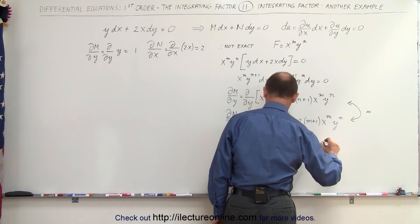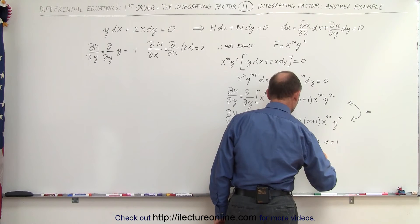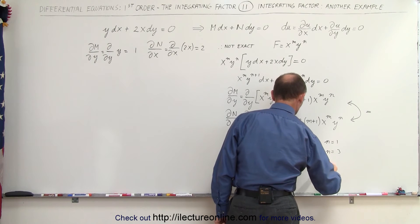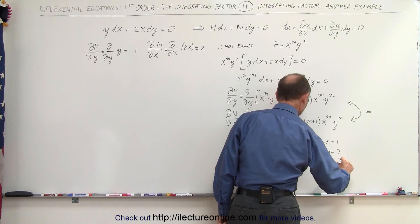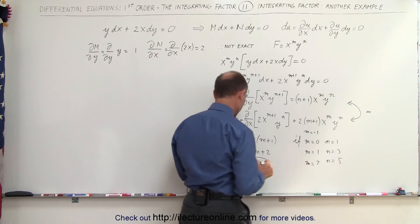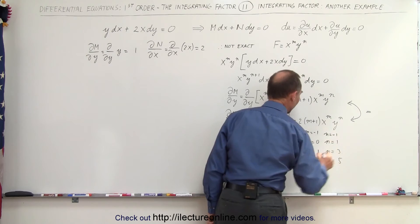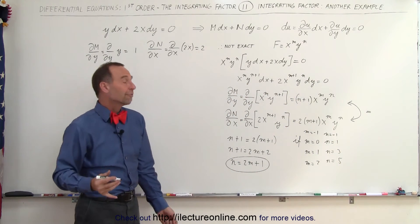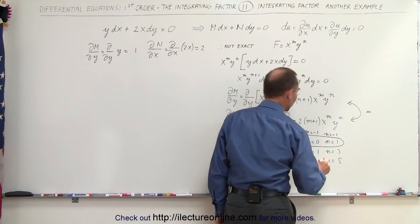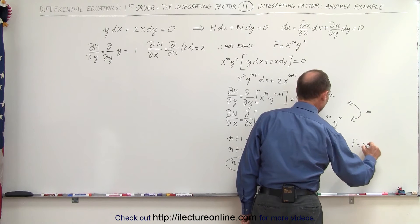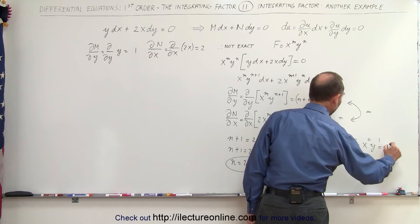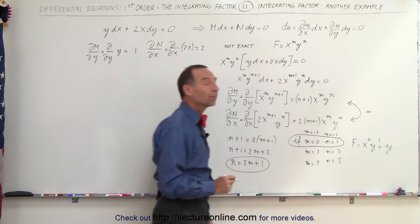Using n = 2m+1: if m=0 then n=1; if m=1 then n=3; if m=2 then n=5; if m=-1 then n=-1. Let's use the integrating factor that appears easiest — m=0, n=1 — so the integrating factor is x^0 · y^1, which is simply y.